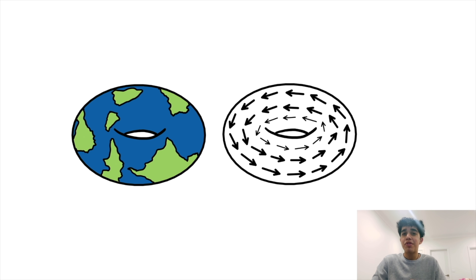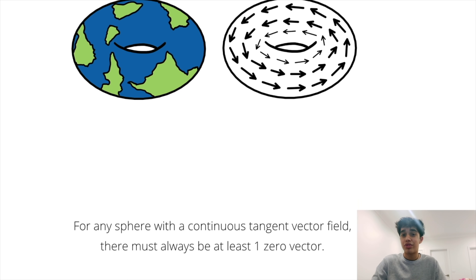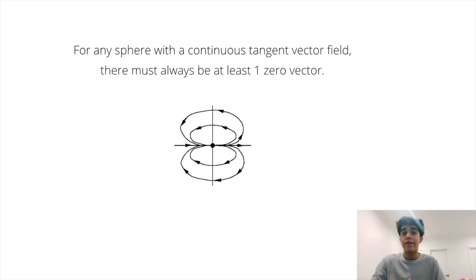Coming back to our world built on a torus, there is a vector field that is non-zero everywhere, since the Euler characteristic of a torus is zero. Since the Poincaré-Hopf theorem always holds true, we can conclude that for any sphere with a continuous tangent vector field there must always be at least one zero vector — such as the example shown with an index of plus two. This ties into our main theorem explaining why there is a place on Earth with no wind.